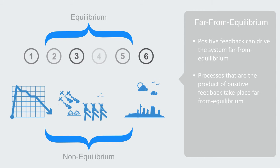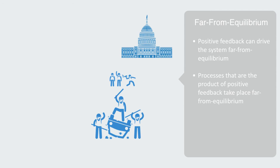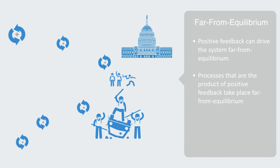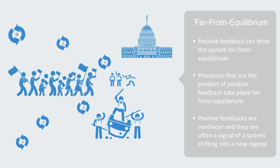Take, for example, a social riot. As the rioting breaks out, your chance of going to jail decreases and the social benefit of joining in increases. This creates an attractor, attracting more elements to align themselves with this new organization. Positive feedbacks are non-linear and they are often a signal of a system shifting into a new regime.